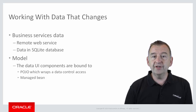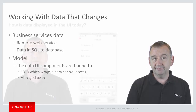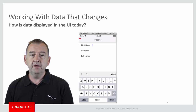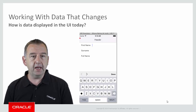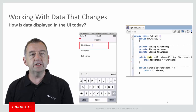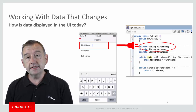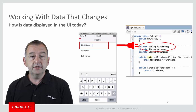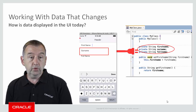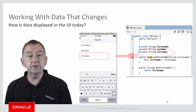Let's remind ourselves of how a page displays data in MAF. In this simple but typical example, we have a mobile application showing three fields: first name, surname, and full name. First name is plugged into data in a managed bean - in this case a property called first name - and there's a setter and a getter for that property. Similarly, surname references a property via getters and setters in the same managed bean. In each case, we use expression language to hook the UI item to the managed bean property.